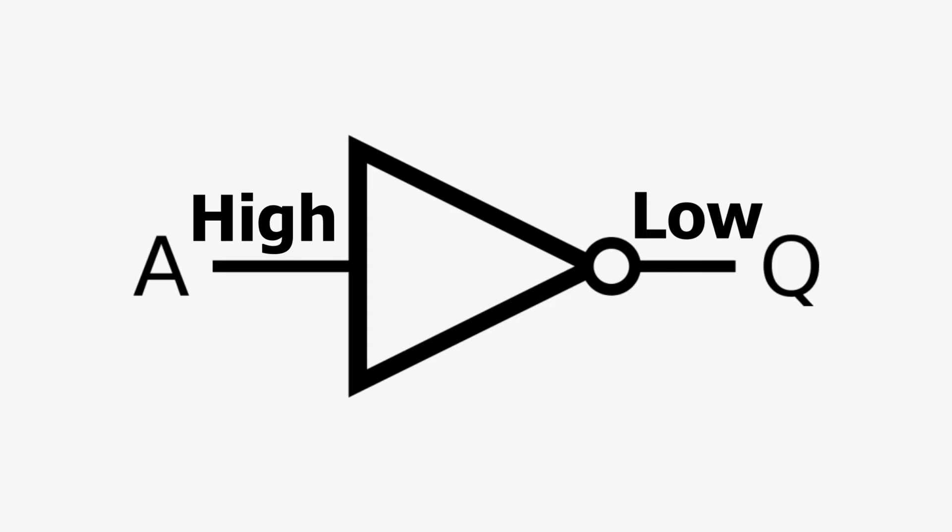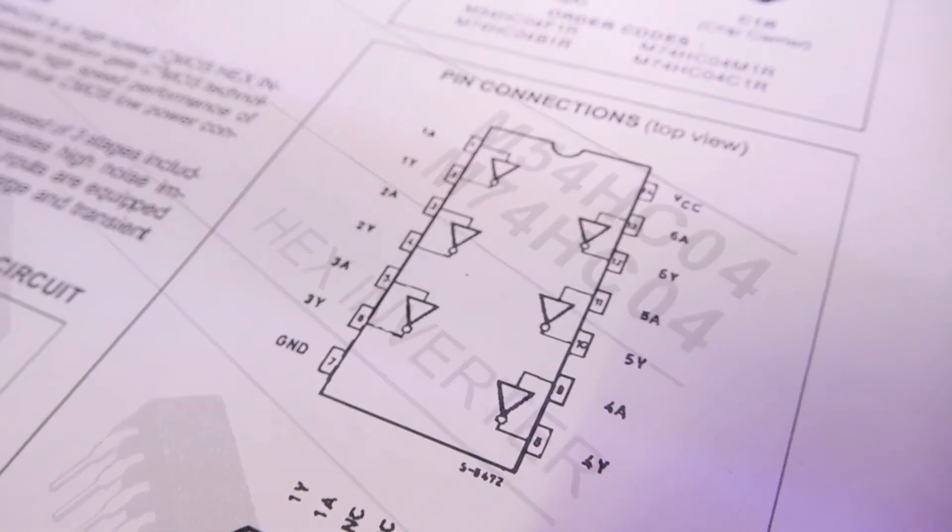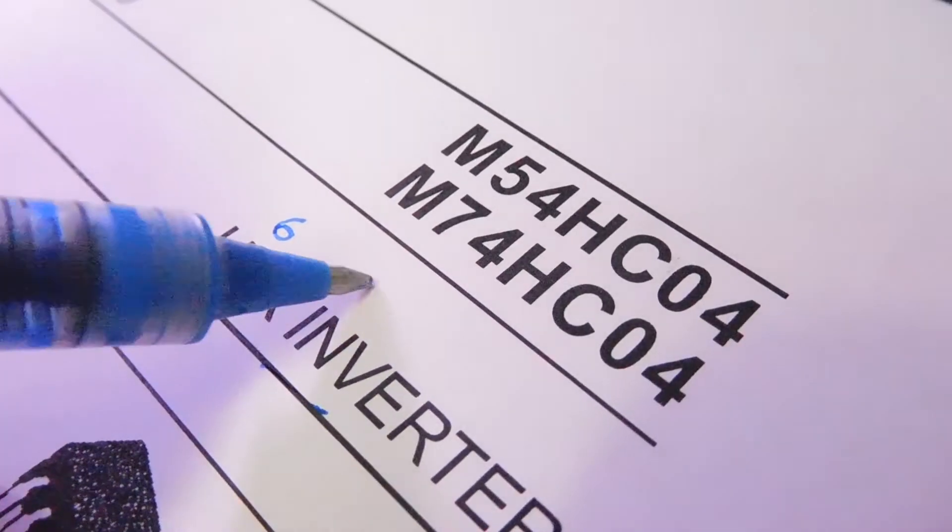We will see the results using a NOT gate, for which I am using 7404 IC. Taking a look at its datasheet, we can find that the IC houses six gates in it. Hence, it is called a hex inverter by the datasheet.